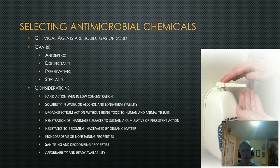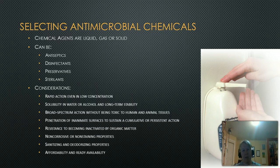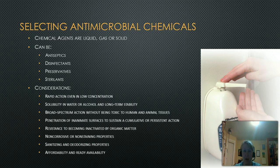Let's start out with how we select antimicrobial chemicals. Chemical agents can be liquid, gas, or solids — they're not always just liquids. And they can serve as antiseptics, which remember are only used on the skin; disinfectants, which only knock down the amount of microbes present; preservatives; and sterilants, which are the ones that can actually kill microbes.